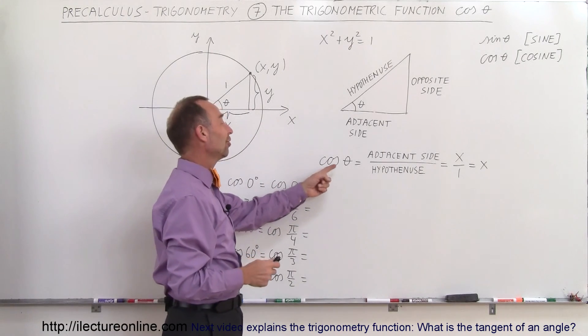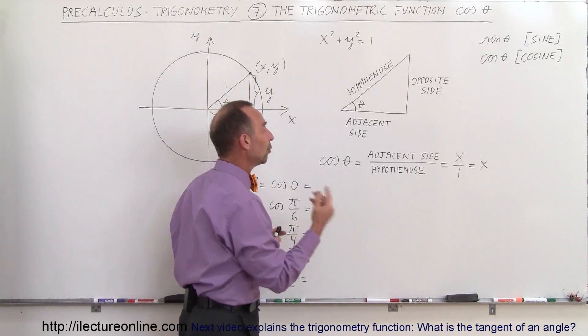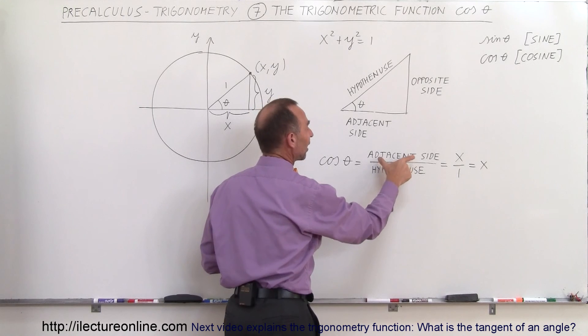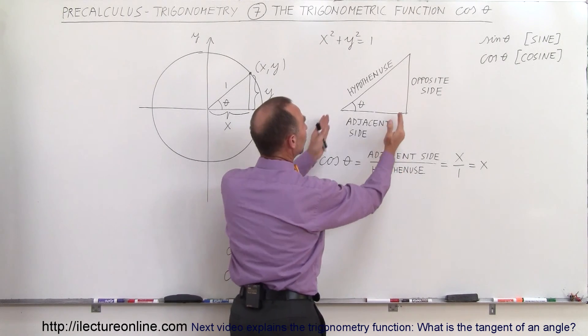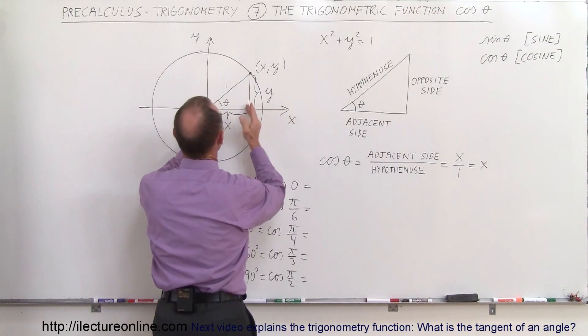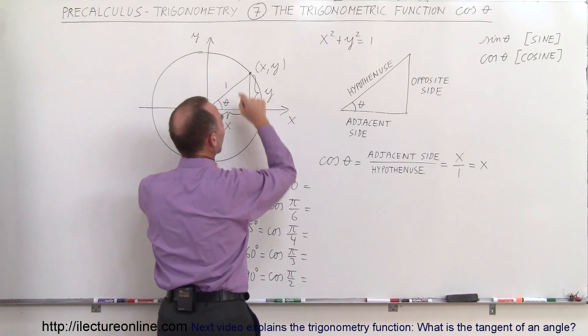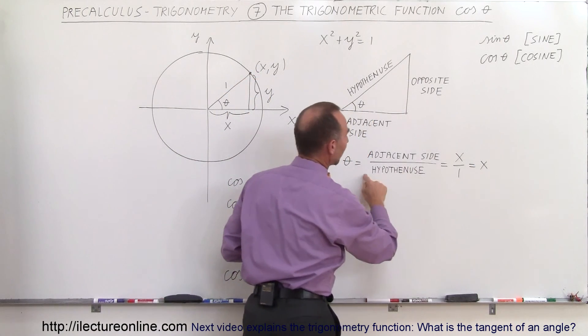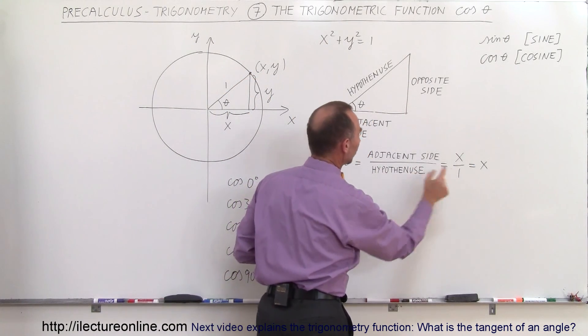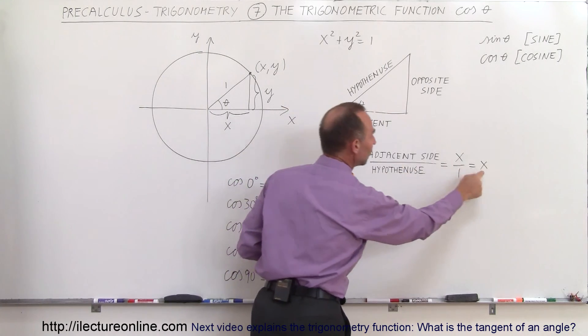The definition of the cosine of theta is equal to the ratio of the adjacent side divided by the hypotenuse. Since the adjacent side represents the x-value of that point right there where the hypotenuse points to, we can say that's equal to x. The hypotenuse of a unit circle is 1, so therefore the cosine of theta is equal to x.